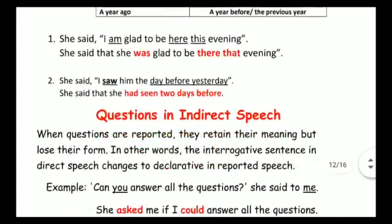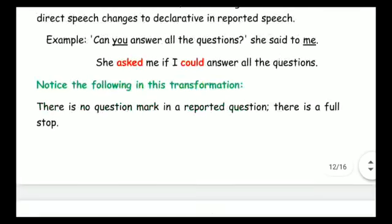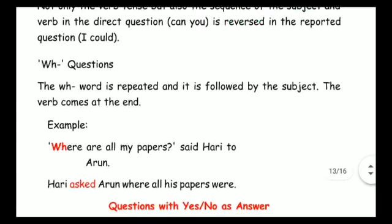Up to now we have seen about questions in indirect speech — what we have to do: we have to use 'asked' instead of 'told', we have to use 'if' instead of 'that'. If there are auxiliary verb questions, we have to use that auxiliary verb after the subject. We have seen WH questions where no changes are made — they are written as it is, only the inverted commas are removed, 'told' is replaced with 'asked', and the WH word goes to the last of the sentence.